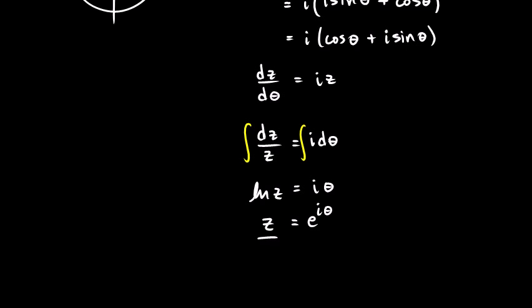And what was z? Remember, z was cosine theta plus i sine theta. So let's write it like that. Cosine theta plus i sine theta equals e to the i theta. So there you have this nice little equation. Cosine theta plus i sine theta equals e to the i theta. So anytime you have a complex number in polar form, it can be expressed as an exponent with base e.